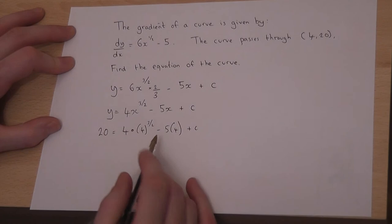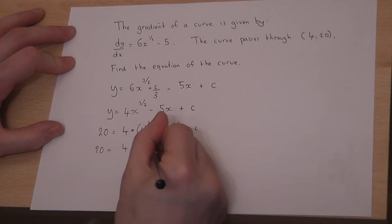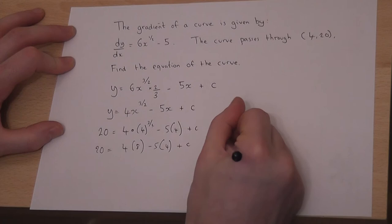Now we could use a calculator here, however, if we don't have a calculator, 4 cubed is 64, then square root of it you get 8. So 20 equals 4 lots of 8, take 5 lots of 4 plus c.